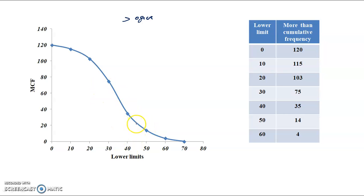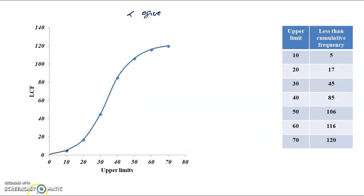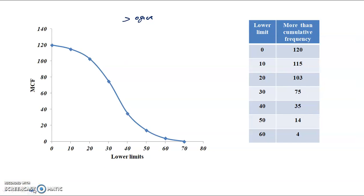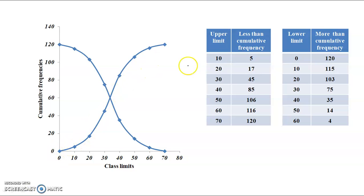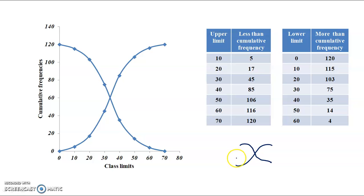What is the more than ogive? We are going to get two ogives — one is the less than ogive and the other is the more than ogive. We plot both on the same graph. The less than ogive rises and the more than ogive falls, and they meet at one point. Both curves have the same shape but in opposite directions. This concludes the Curves and Diagrams section.